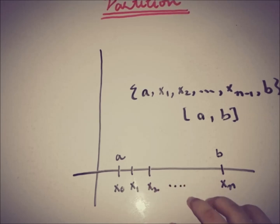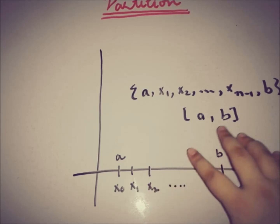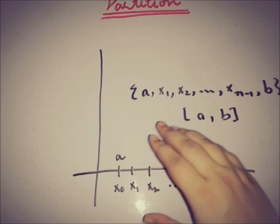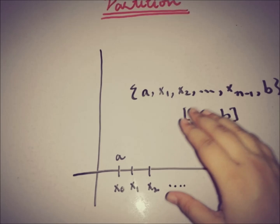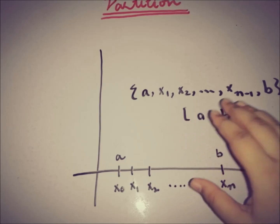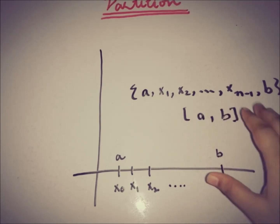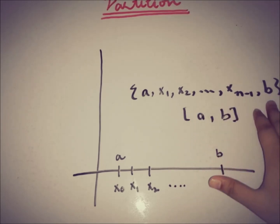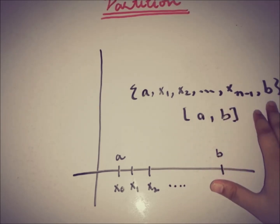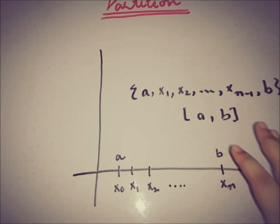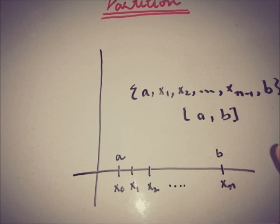There is an ordering relation between the elements: a < x1 < x2 < x3 < ... where b is the largest element in the set. This is what defines a partition of a closed interval.